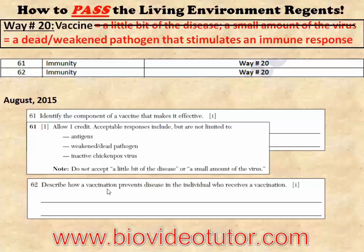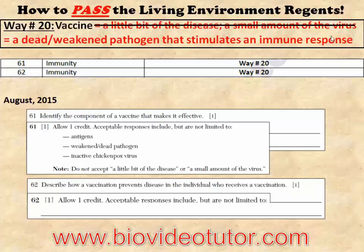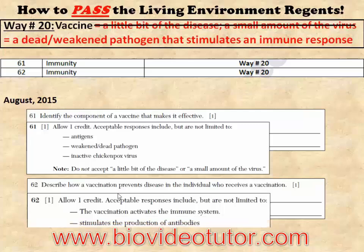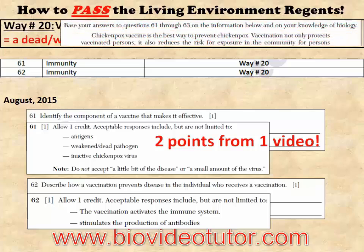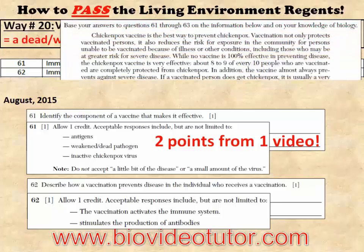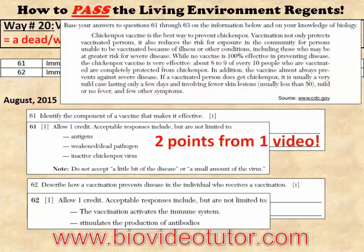Question 62 from August 2015: 'Describe how a vaccination prevents disease in the individual who receives the vaccination.' It stimulates an immune response — as long as you write something along those lines, you get one point. It activates the immune system or stimulates the production of antibodies — both are acceptable answers. That shows you how you get two points for short answer questions just from one video, and there was a reading passage you didn't even need to read to answer those questions correctly.